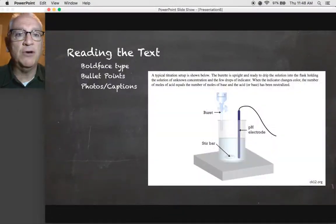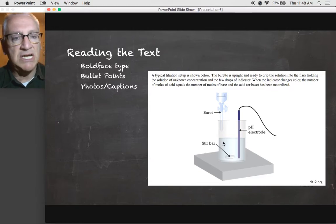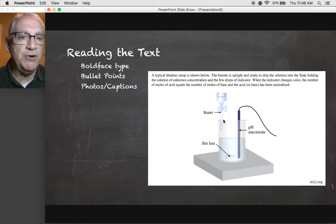The next thing is photos or captions. You can see in this picture of a titration experiment, it actually gives you a caption. And so instead of just having a picture going, oh isn't that neat, let me go on and keep reading because I need to get this done, you actually can take a look. Take 20 or 30 seconds to look. The burette, the stir bar, and the pH electrode. And this gives you an understanding of what this setup can do.